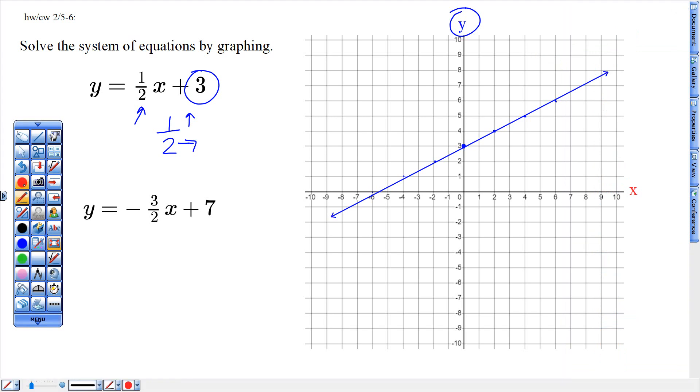Graphing this one in red, starting at seven on the y-axis, and then negative three over two. I have you write it like this with that negative on top, which tells you that you're going right two, down three from that starting point.